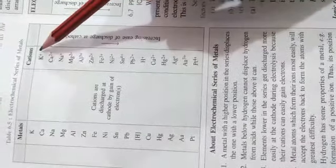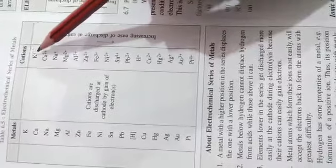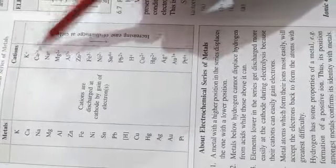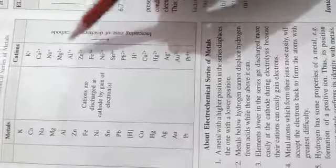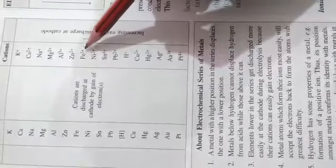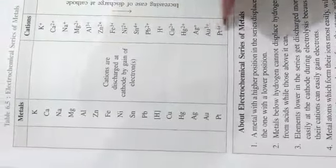This is the electrochemical series. The series lists metals from potassium to platinum. The most reactive metals are at the top, the least reactive are at the bottom. They form ions by losing electrons: +1 means losing one electron, +2 means losing two electrons, and +3 means losing three electrons. The most reactive and least reactive elements are clearly separated in this series.